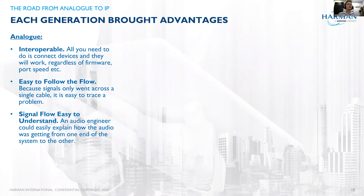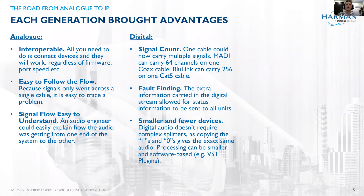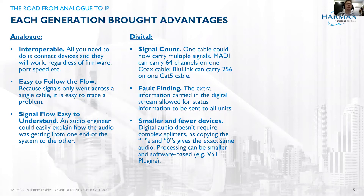So it sounds like a perfect world — why would we want to go further? With digital, the biggest difference is that you now have a lot more signals on one cable. A MADI signal, for example, which is standard in a lot of broadcast, allows you to get 64 channels on a single coax cable — instead of pulling a heavy 48 or 64-core multicore cable weighing a few kilos per meter, you just carry one BNC cable. There are also systems like Harman's HiQnet BLU link which can do 256 channels on a single Cat5 cable. The efficiencies in space, weight, and cost are quite significant.